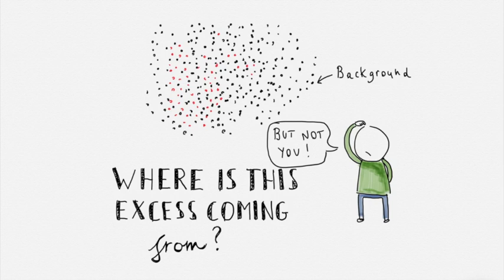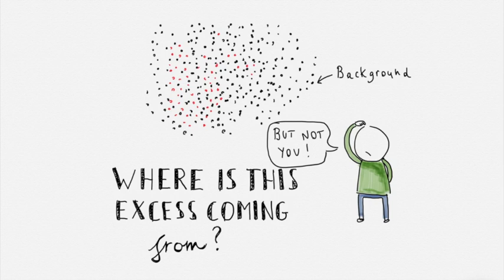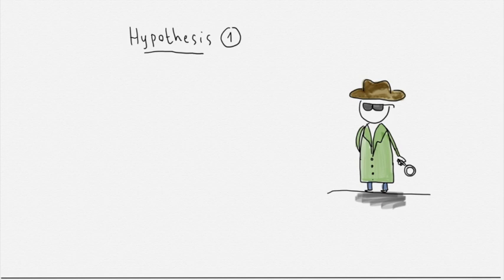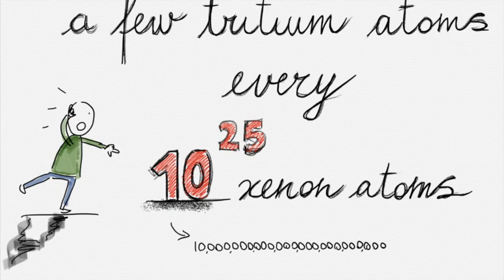This raises the exciting question: where is this excess coming from? One explanation could be a new, previously unconsidered source of background caused by the presence of tiny amounts of tritium in the Xenon-1-ton detector. Only a few tritium atoms for every 10 to the 25th xenon atoms would be needed to explain the excess.